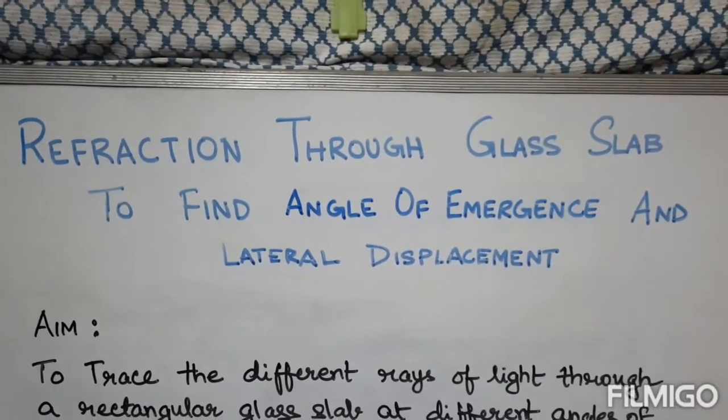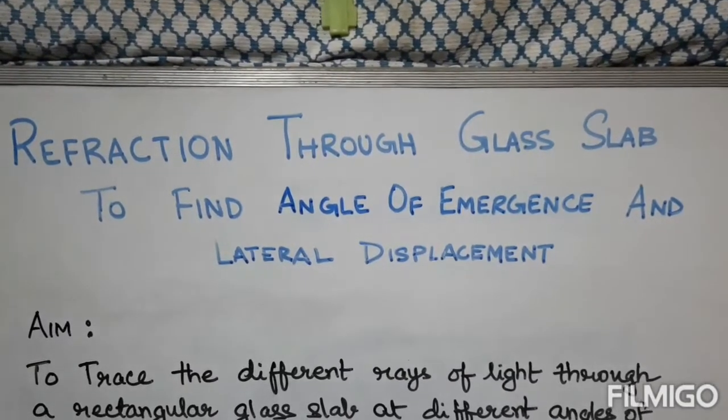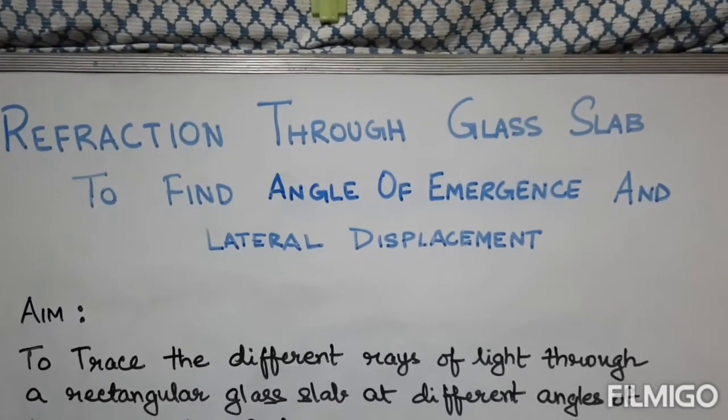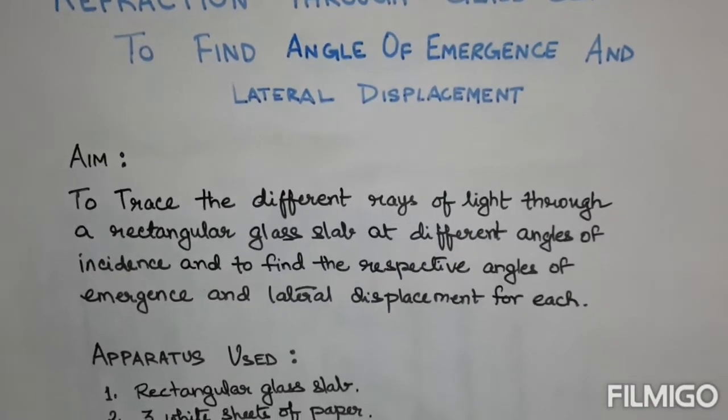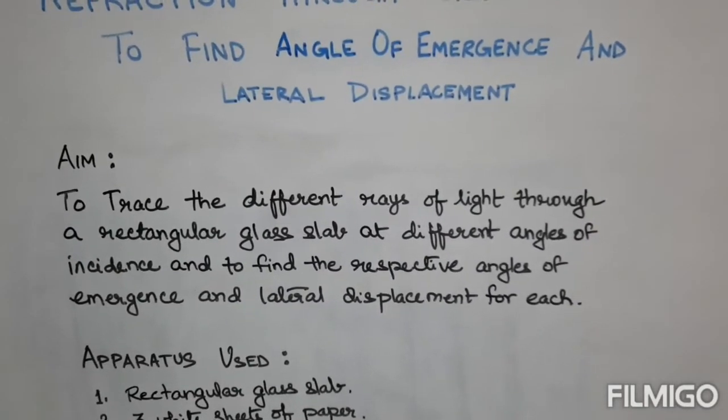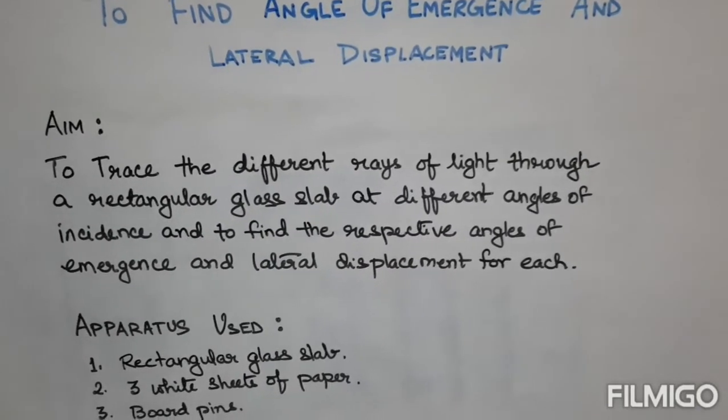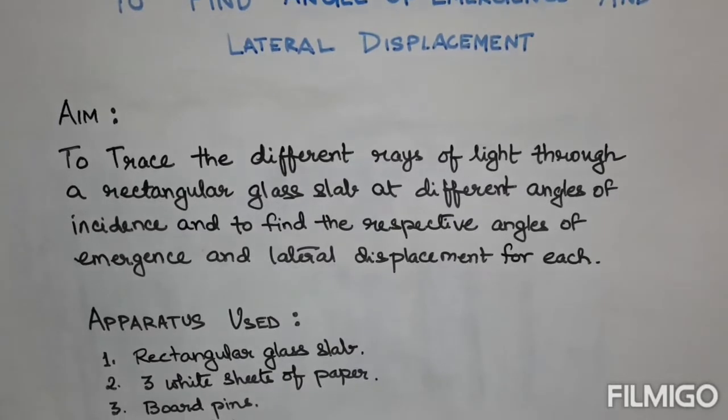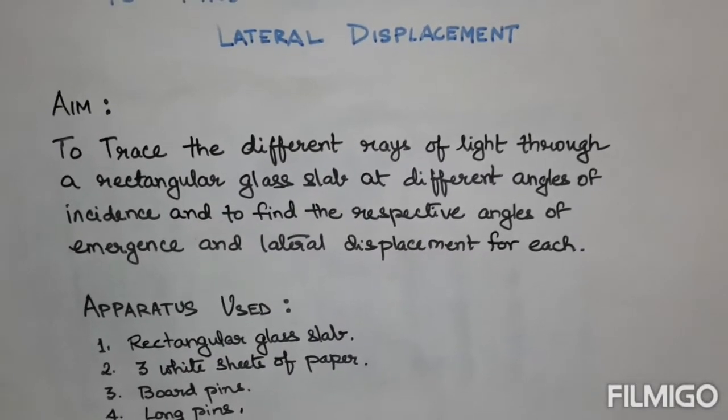Experiment refraction through glass slab to find angle of emergence and lateral displacement. The aim is to trace the different rays of light through a glass slab at different angles of incidence and to find out the respective angle of emergence and lateral displacement for each case.